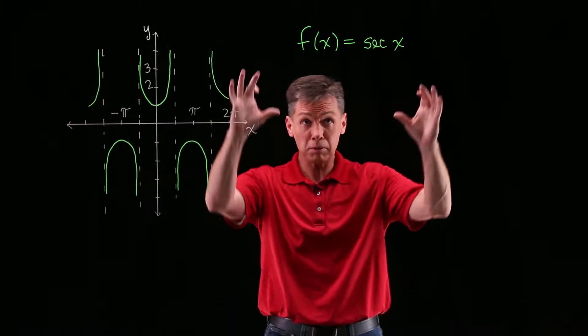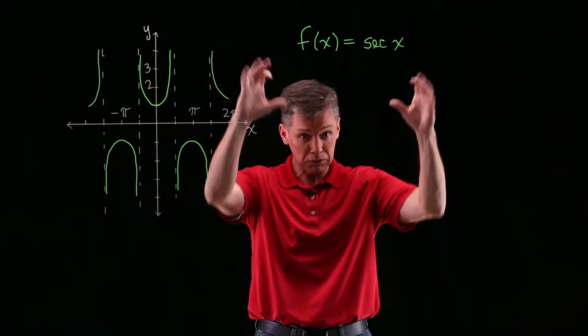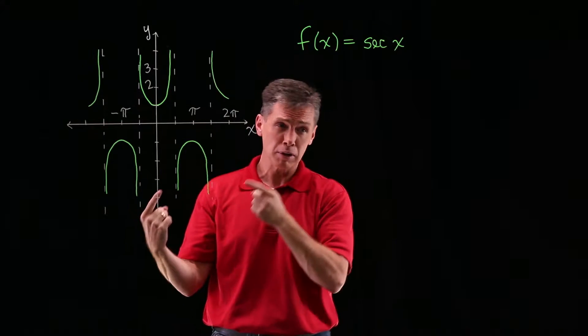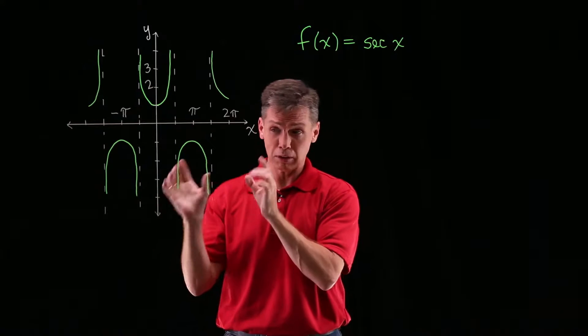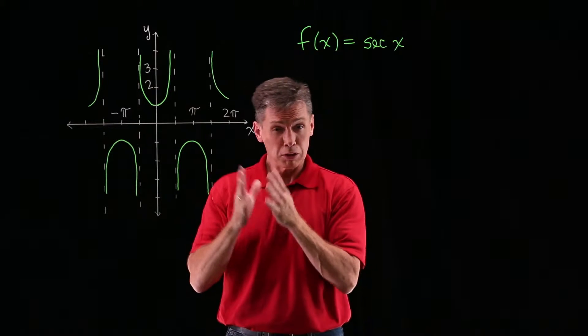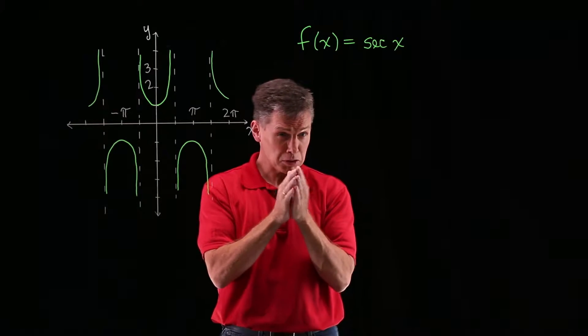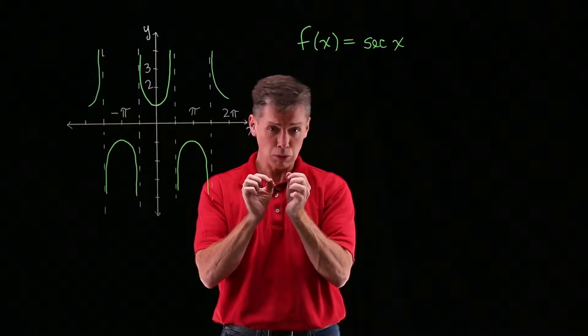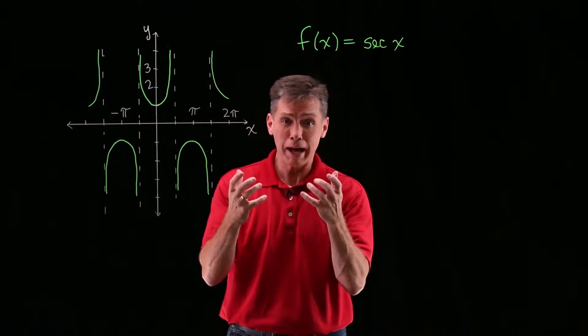So for this problem the function is secant of x and part of our lesson here is that we know what the graph of secant of x looks like. That's our graph. And if we're going to use that graph to determine if the function is even, odd, or neither, what we're looking for is symmetry or lack of symmetry.